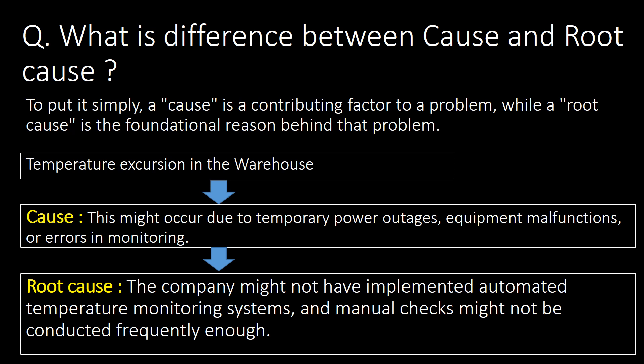What is the difference between cause and root cause? Although in the pharmaceutical industry both terms are used interchangeably, there is a fundamental difference. A cause is a contributing factor to a problem, while root cause is the fundamental reason behind that problem. For example, in a temperature excursion in a warehouse, the cause might be temporary power outages, equipment malfunctions, or errors in monitoring. Digging deeper, the root cause may be that the company had not implemented automated temperature monitoring systems and manual checks were not conducted frequently enough.